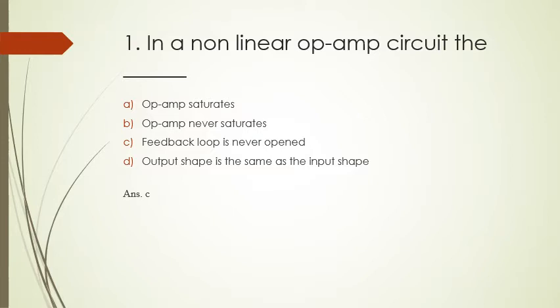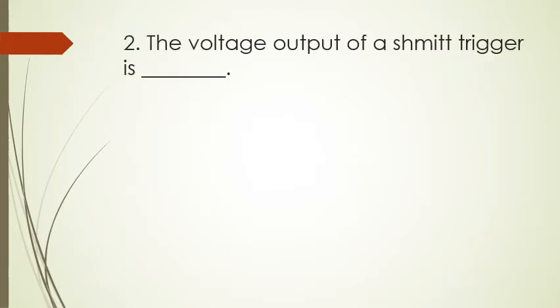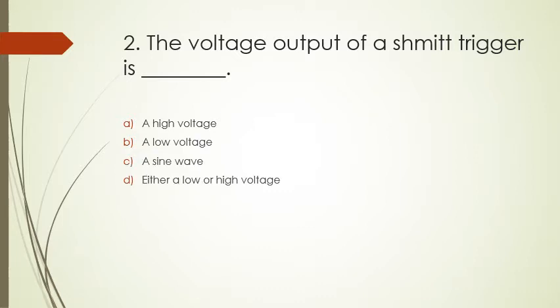The voltage output of a Schmitt trigger is blank. Options: high voltage, low voltage, sine wave, or either low or high voltage. As we know, Schmitt trigger shows the waveform in both directions—positive and negative—so option D is correct: the voltage output of a Schmitt trigger is either low or high voltage.